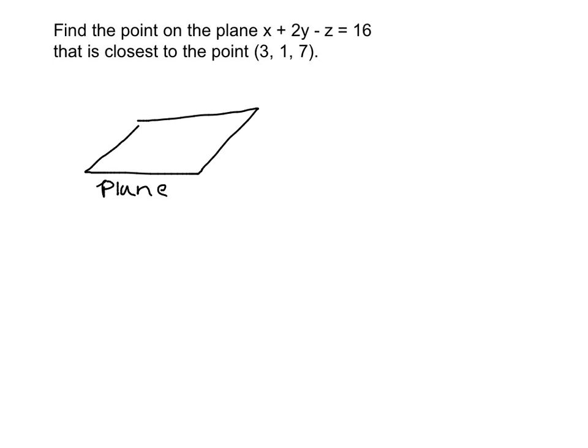And we have this point out here in space with coordinates (3, 1, 7). The first thing we have to recognize is the point that's on the plane that we're looking for, that happens to be closest to the given point, would occur when we drop directly down and find a perpendicular.